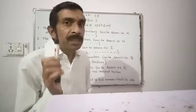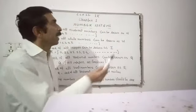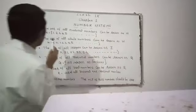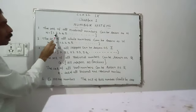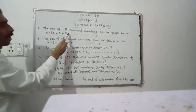So, the set of all natural numbers can be taken as N. Therefore, N is equal to set 1, 2, 3, 4, 5, etc.